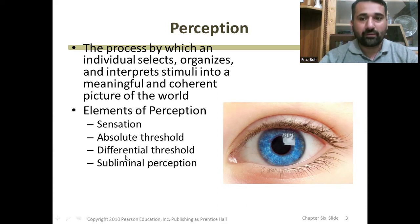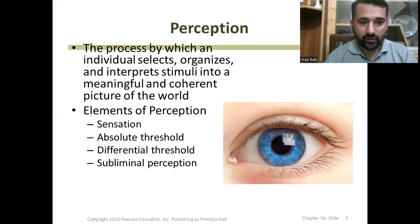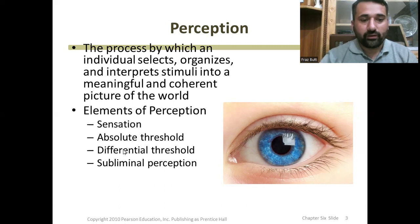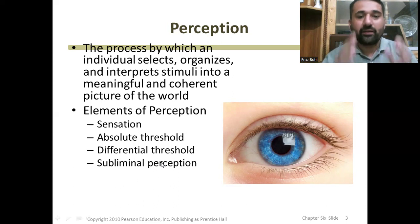The stimuli is anything you are observing, and making a meaningful and coherent picture in your mind is the process of perception. There are actually four elements of perception which combine to make the full concept: sensation, absolute threshold, differential threshold, and subliminal perception. We will explain all four elements one by one in the coming slides.